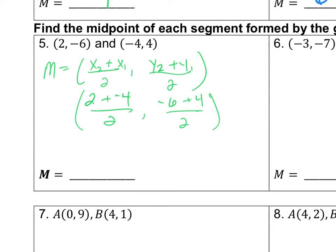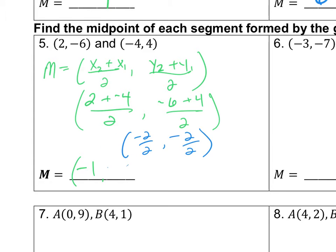2 plus negative 4 is negative 2, so we've got negative 2 divided by 2, which is negative 1. Now, negative 6 plus 4 is negative 2, and negative 2 divided by 2 is also negative 1. So the midpoint between those two Cartesian coordinate points is negative 1, negative 1. We're just taking the average of the x-coordinates and the average of the y-coordinates.